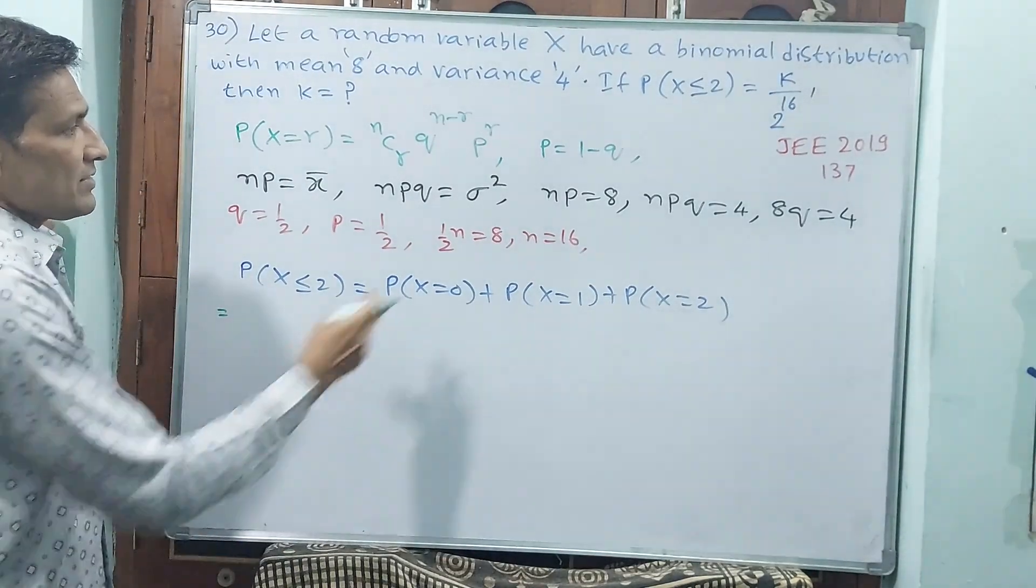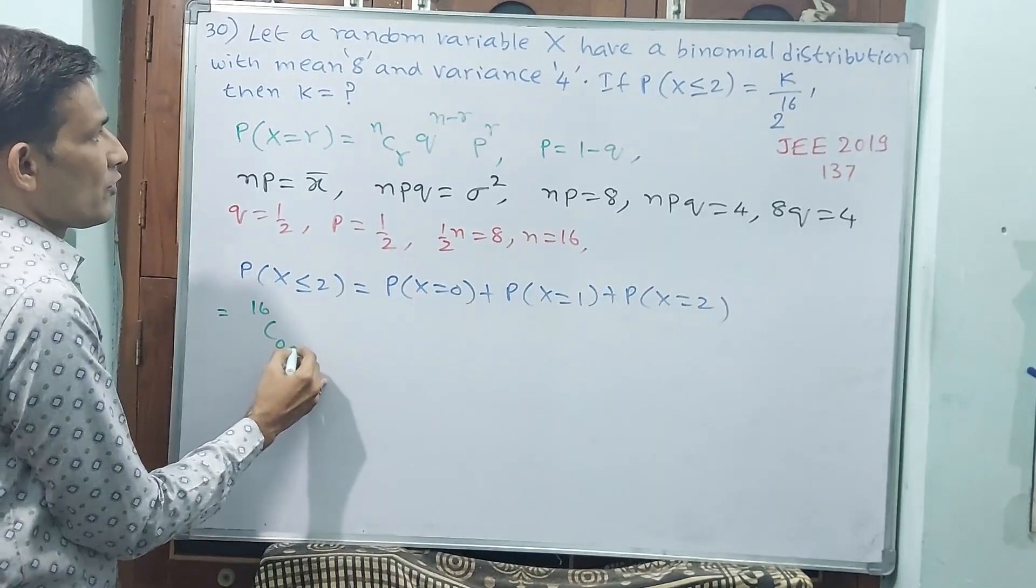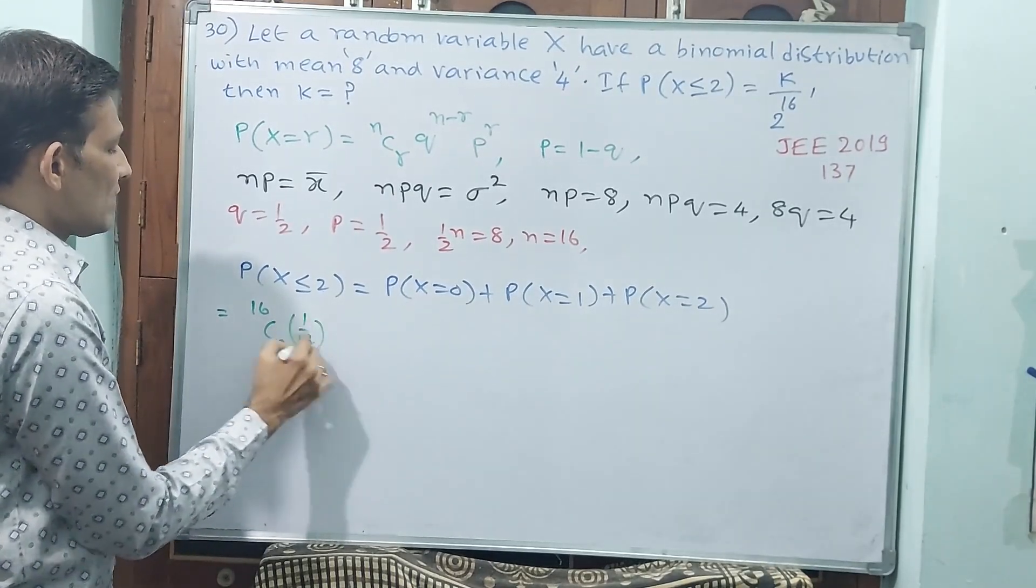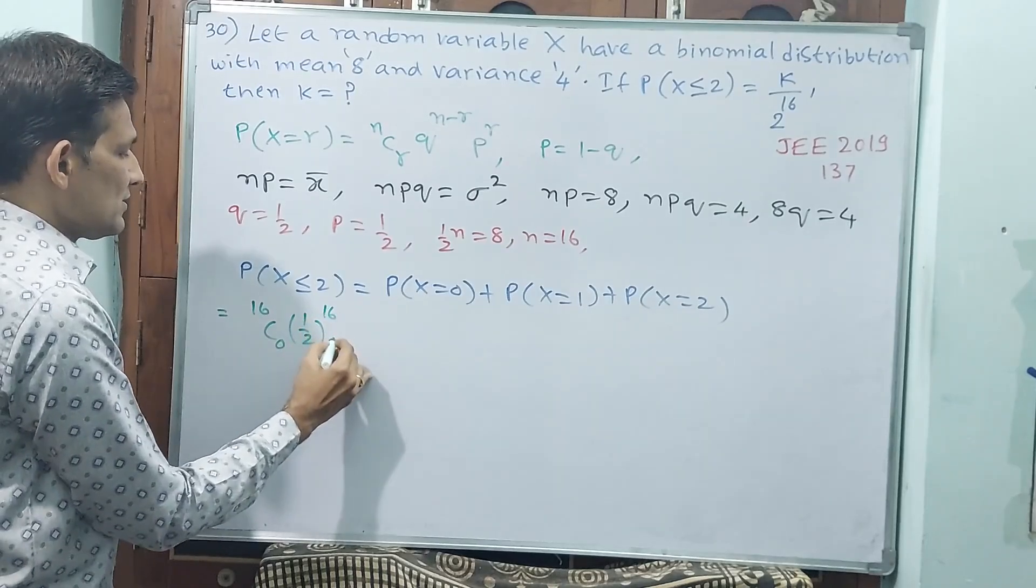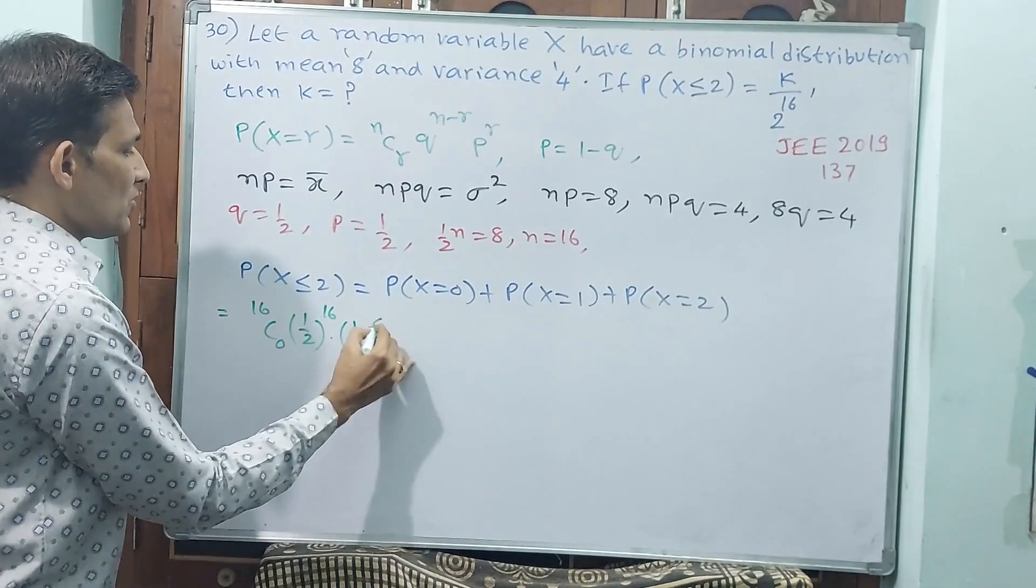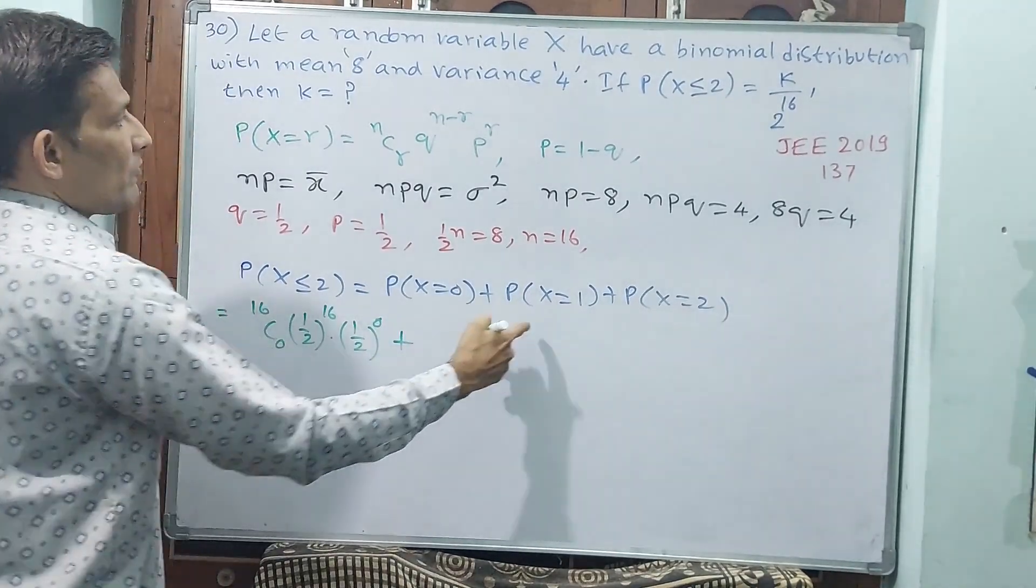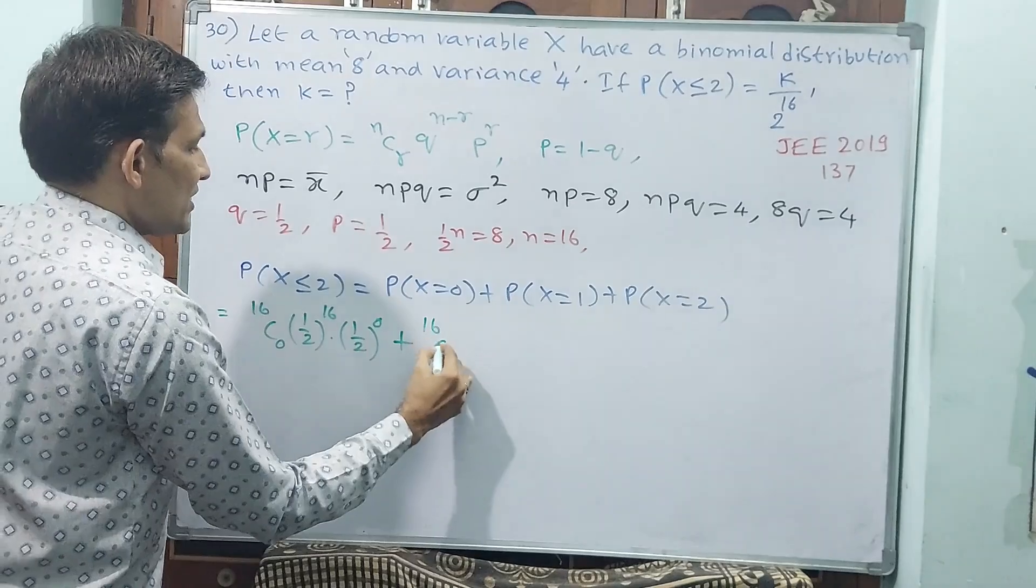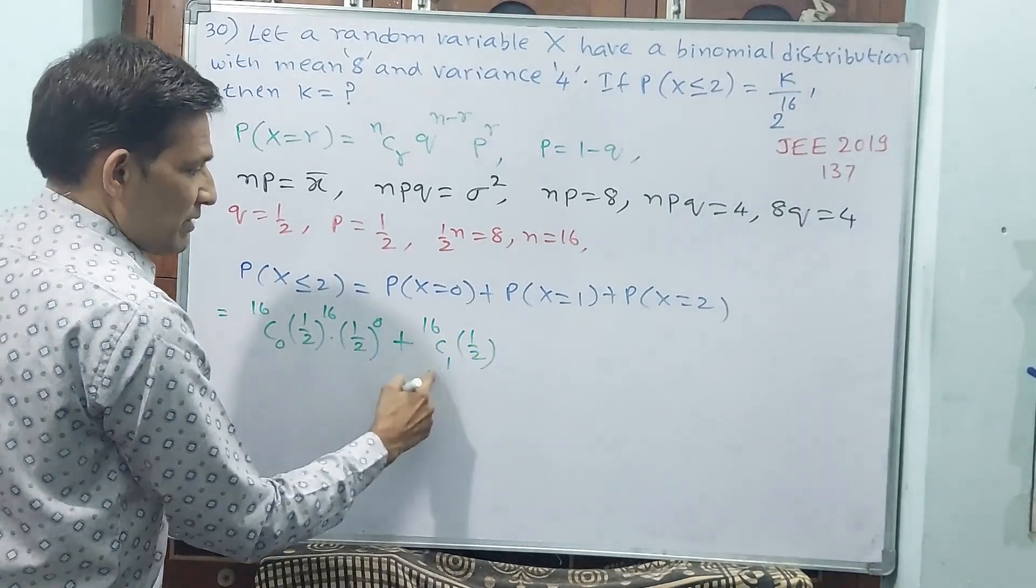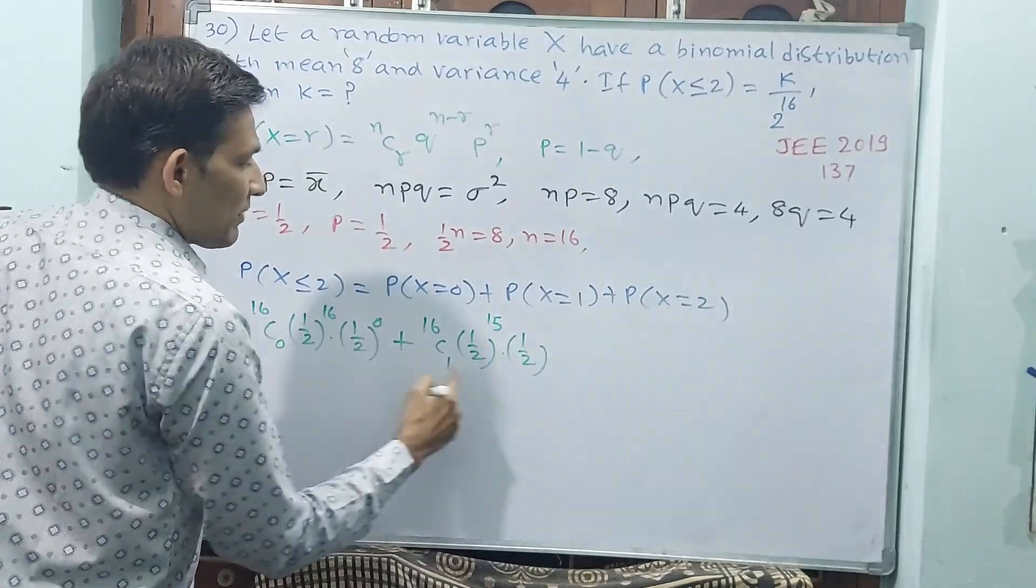See, nCr, n is 16. That means it is 16C0 × (1/2)^16 × (1/2)^0. This is this one. Plus, now 1. 1 means 16C1 × (1/2)^15 × (1/2)^1.